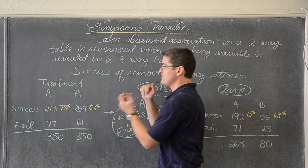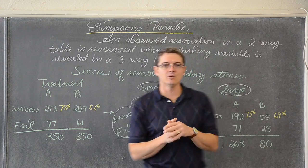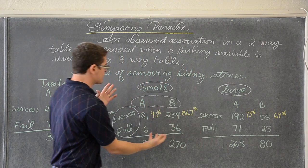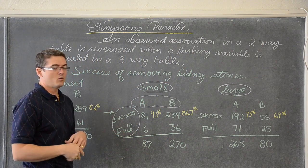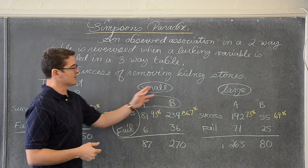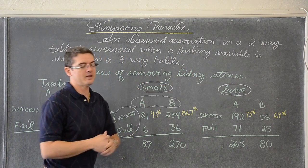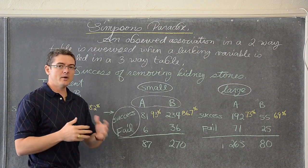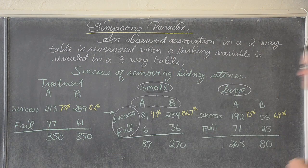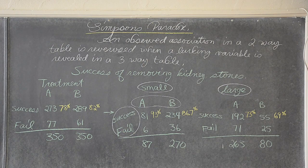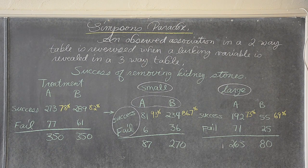You observe a two-way table, and all those results reverse when you reveal that lurking variable in the three-way table. Hope these are helping — go do your homework. Mr. Tarrou out.